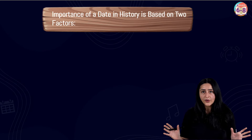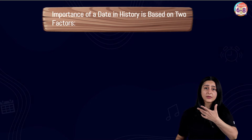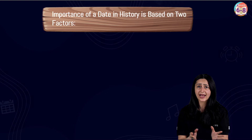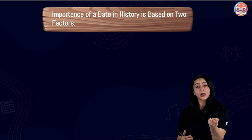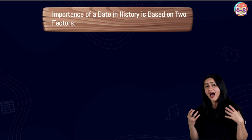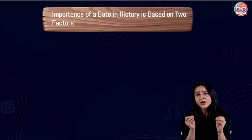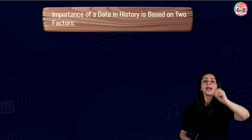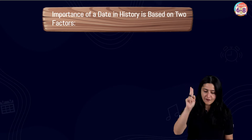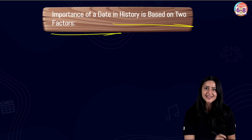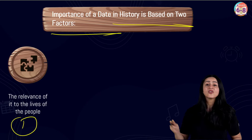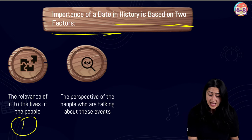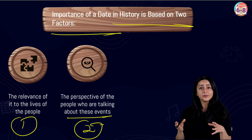There are so many dates in history — the Quit India Movement in August 1942, the Storming of the Bastille on 14th July 1789, the First World War from 1914 to 1918. But who decides which dates are important and how? The importance of a date is decided based on two factors: first, the relevance of that particular event to the lives of the people; and second, the perspective of the people who are talking about those events.